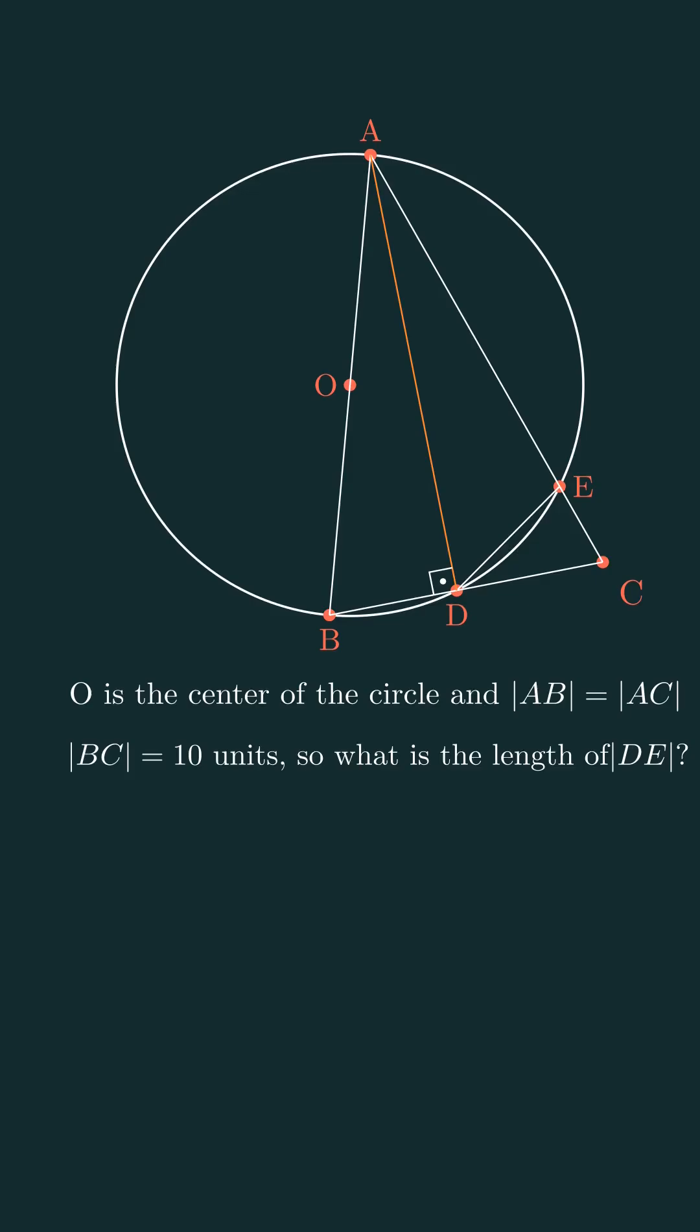The question also tells us that AB equals AC, so triangle ABC is isosceles. In an isosceles triangle, if you draw a perpendicular from the vertex to the base, it will bisect the base into two equal parts.